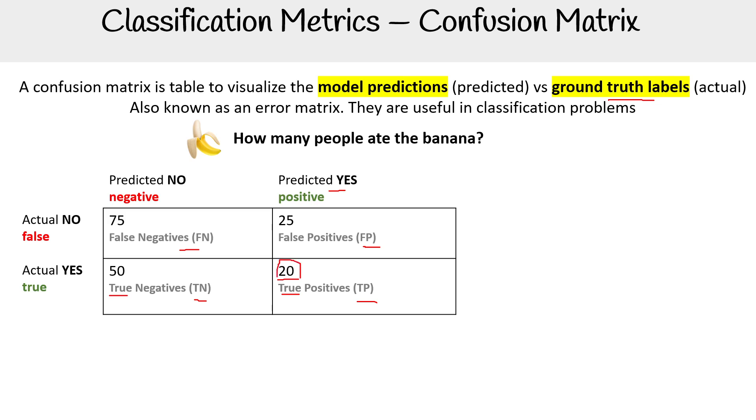And then over here, we have 50 predictions that were correct assuming that they did not eat the banana.